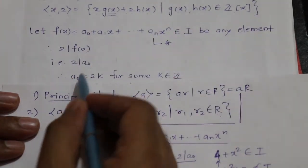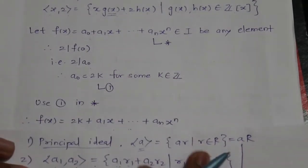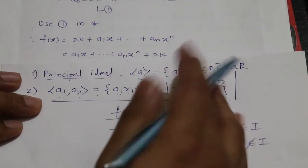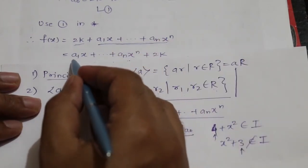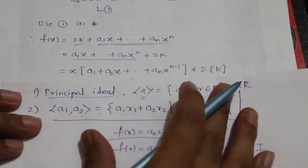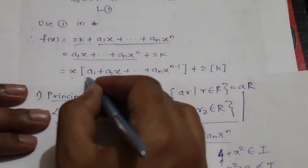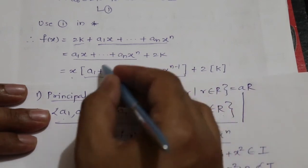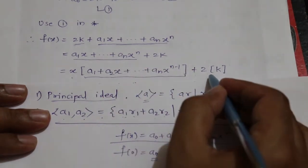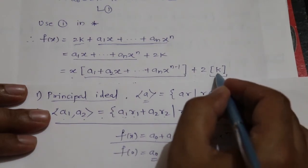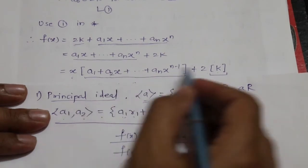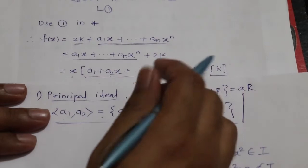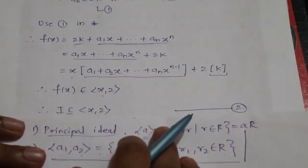Substituting a₀ = 2k, we get f(x) = 2k + a₁x + ... + aₙxⁿ, which can be rewritten as x·(a₁ + a₂x + ... + aₙxⁿ⁻¹) + 2·k. Here the first part is x times a polynomial in ℤ[x], and the second part is 2 times the constant polynomial k. Therefore f(x) ∈ ⟨x, 2⟩, so I ⊆ ⟨x, 2⟩.